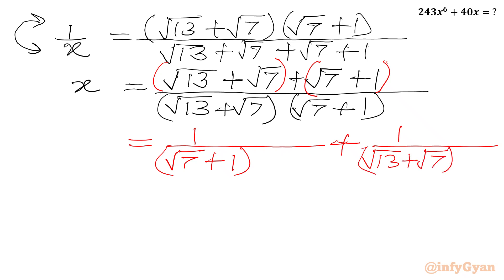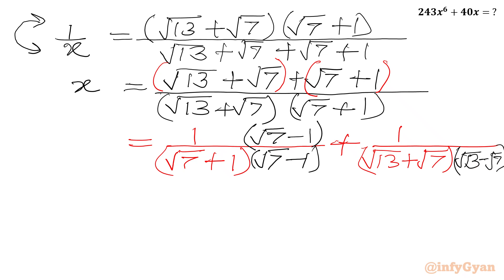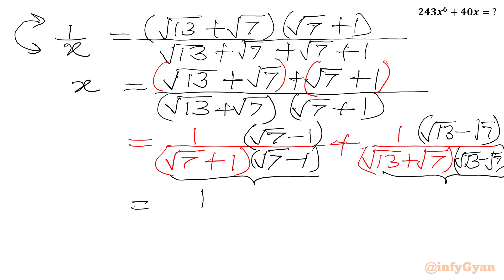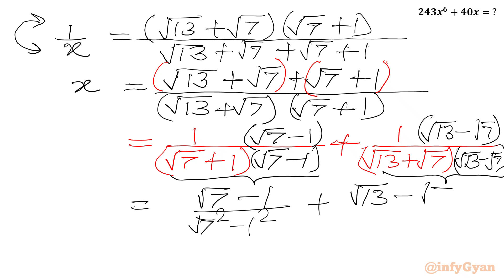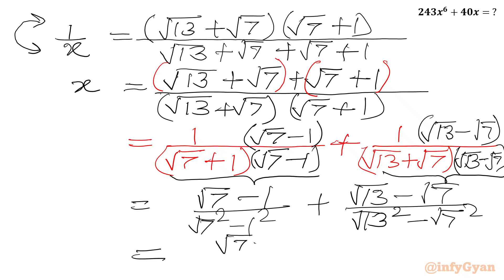Now we will rationalize our denominator. I will multiply by root 7 minus 1, so I need to write root 7 minus 1 in the numerator as well. Here I will multiply by root 13 minus root 7, so I need to multiply the numerator by root 13 minus root 7. In the denominator we get the algebraic form A plus B times A minus B. So I will write root 7 minus 1 over root 7 squared minus 1 squared, and root 13 minus root 7 over root 13 squared minus root 7 squared. This gives root 7 minus 1 over 7 minus 1, which is over 6, and root 13 minus root 7 over 13 minus 7, also over 6.